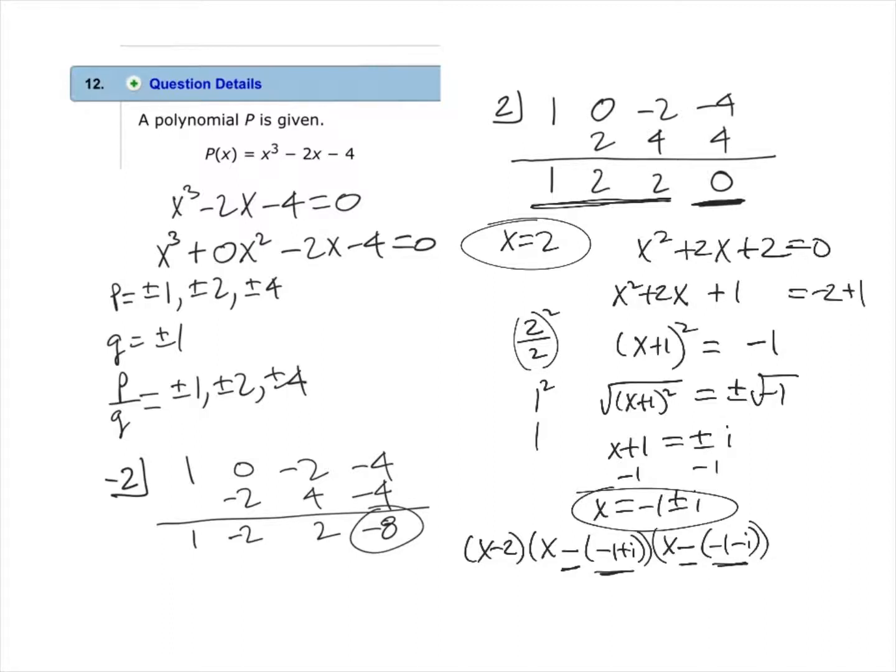Now we can eliminate these parentheses and simplify these factors a little and we wind up with x minus 2 times x plus 1 minus i times x plus 1 plus i. Now we have factored this polynomial.